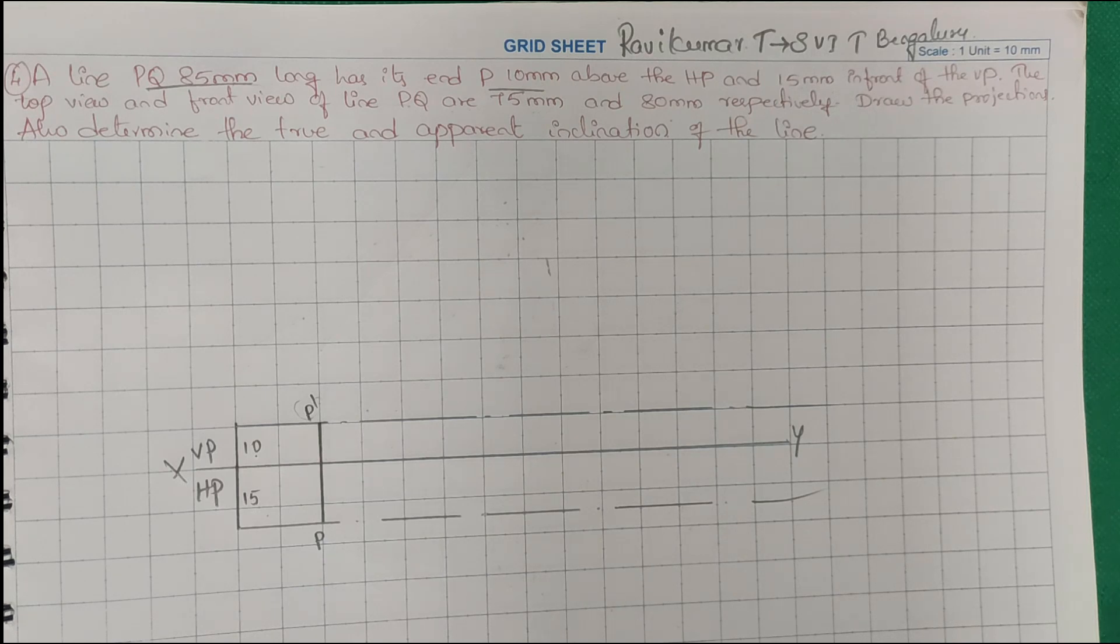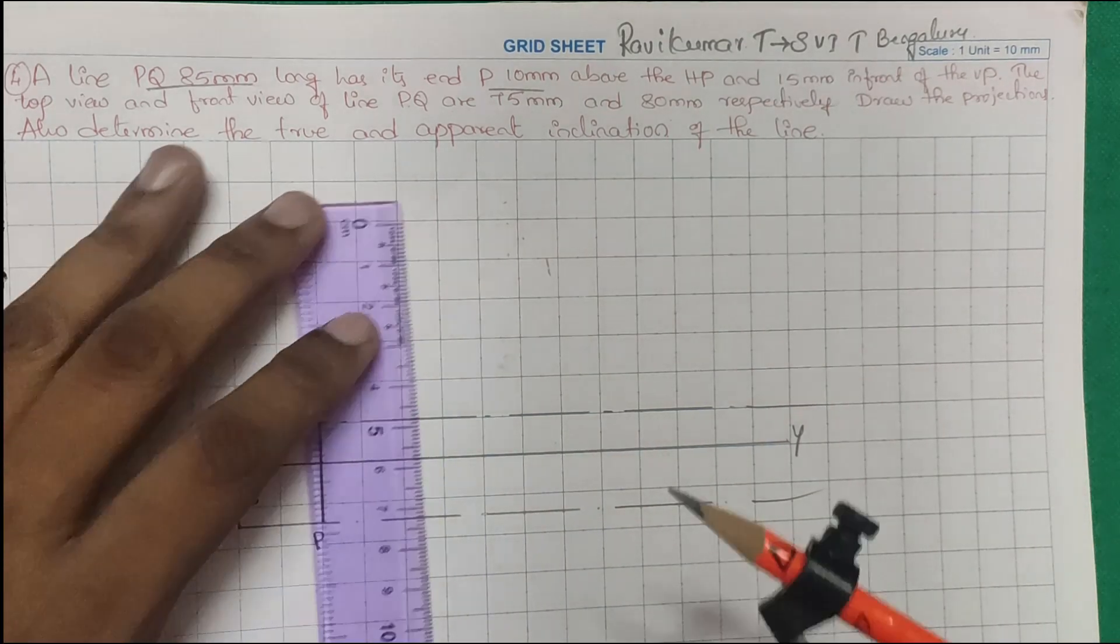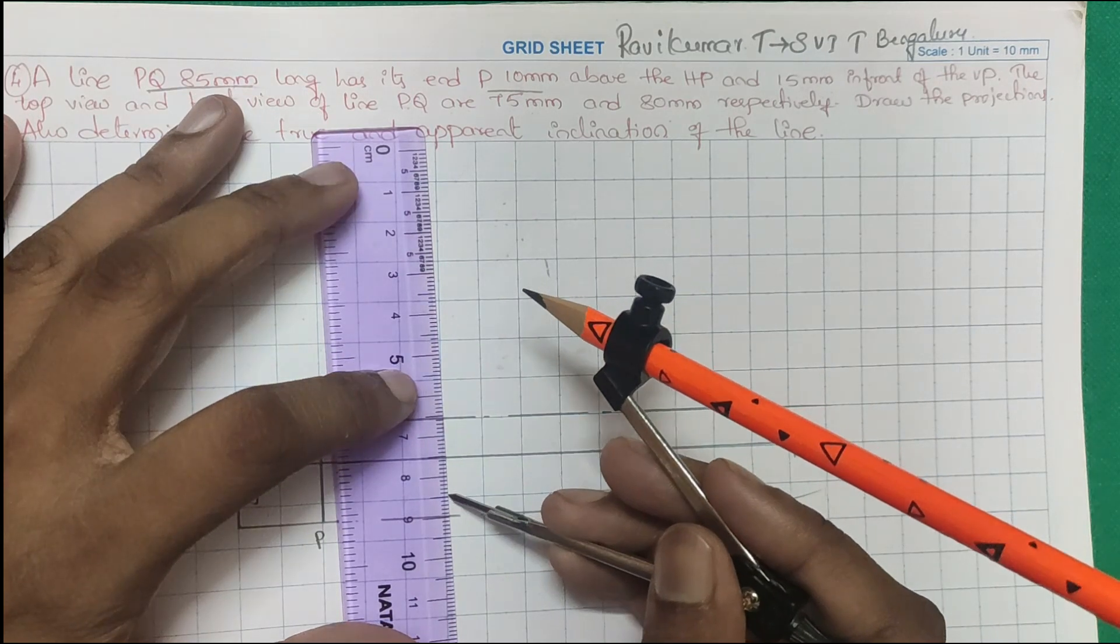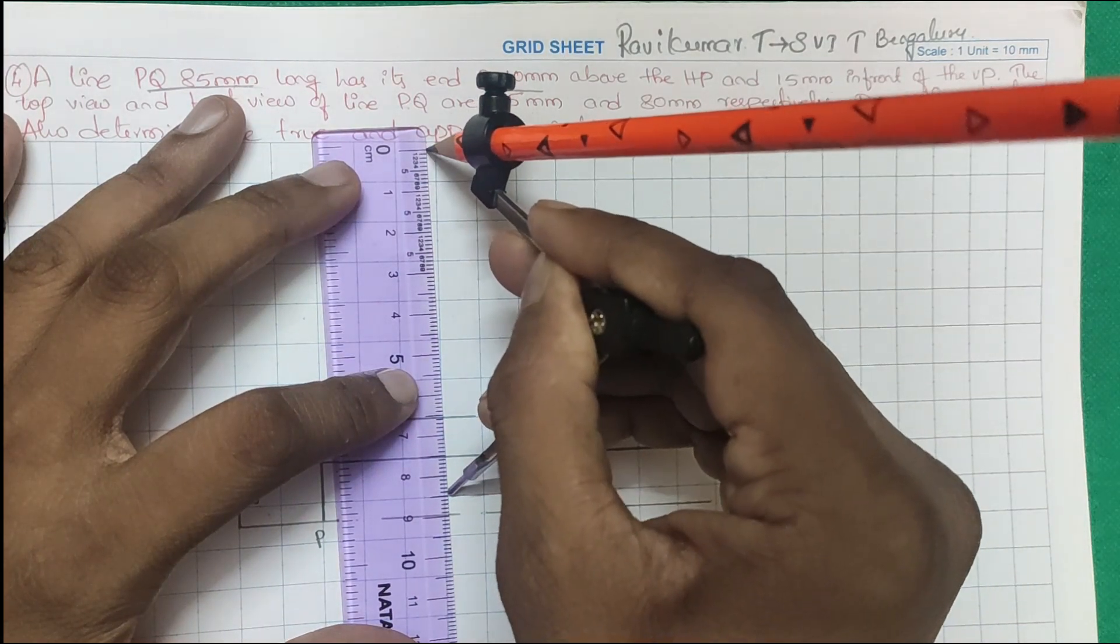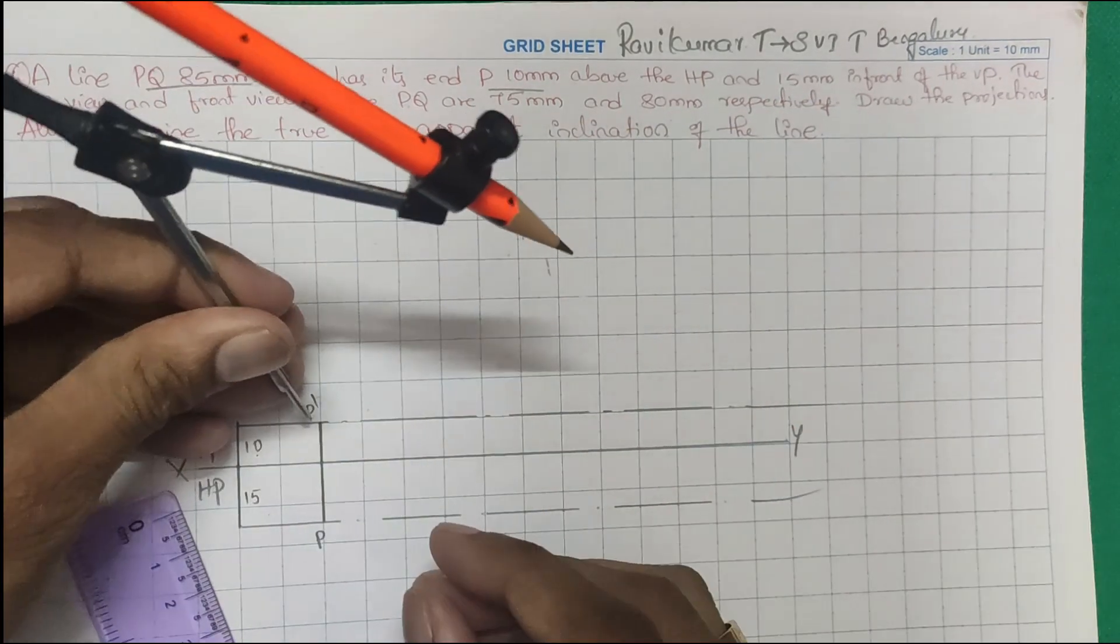Here the very important thing is you have to note it down from where you have to start this problem. This problem is a little bit tricky. First I will take an 85mm line and take one reference point.